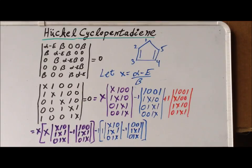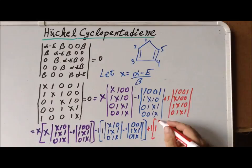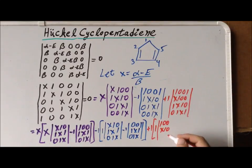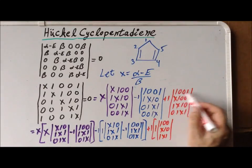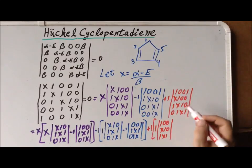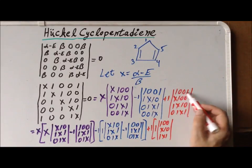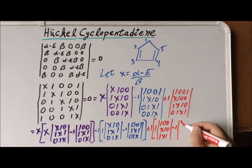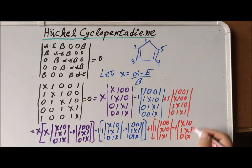Last but not least, we need to evaluate the four-by-four determinant here. Our first coefficient is going to be a one. Our last coefficient is going to be a minus one — plus, minus, plus, minus — so we have a minus one there. Now we have expanded the red four-by-four determinant as a series of red three-by-three determinants.